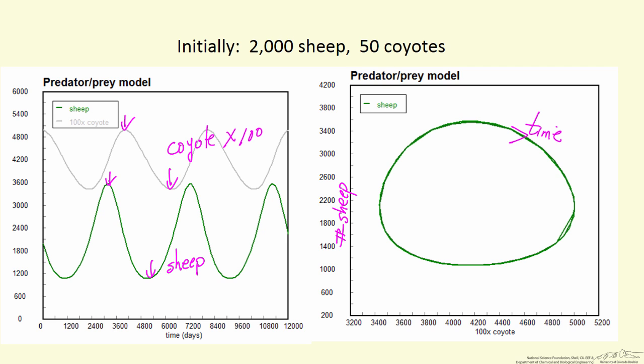I've taken the data on the left and picked a point: for this many coyotes, I have this many sheep. At a later time, different numbers of coyotes and sheep. I plot those continuously going around this phase plane,